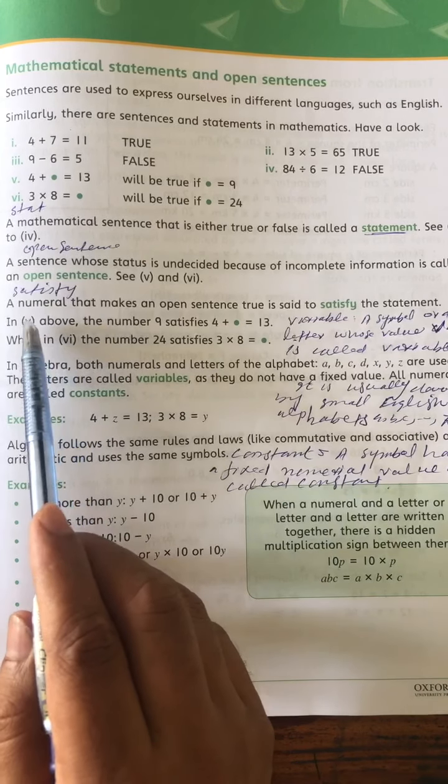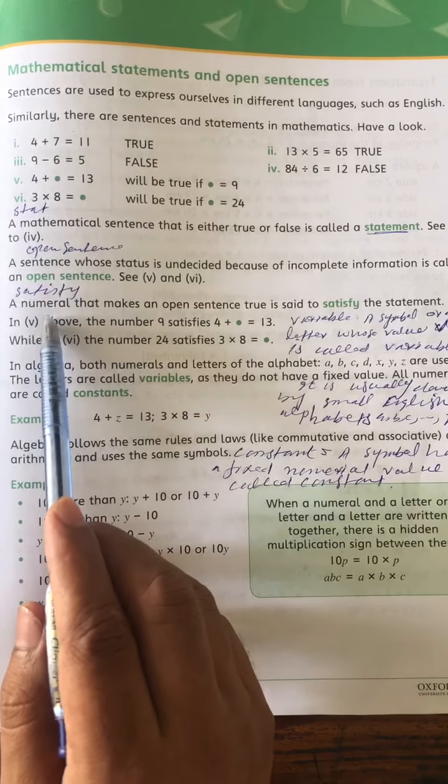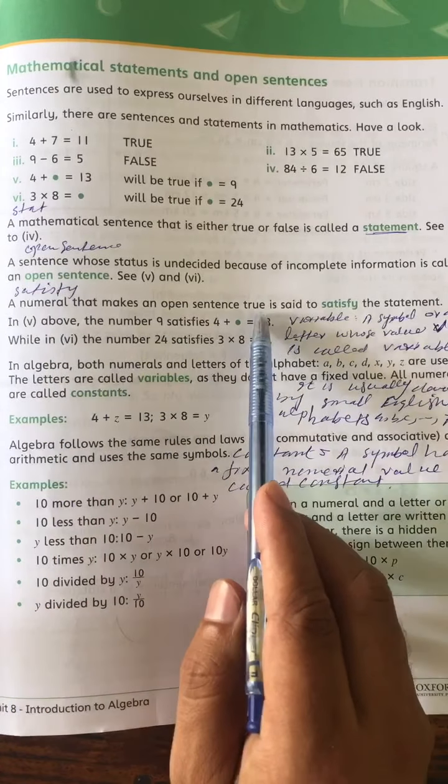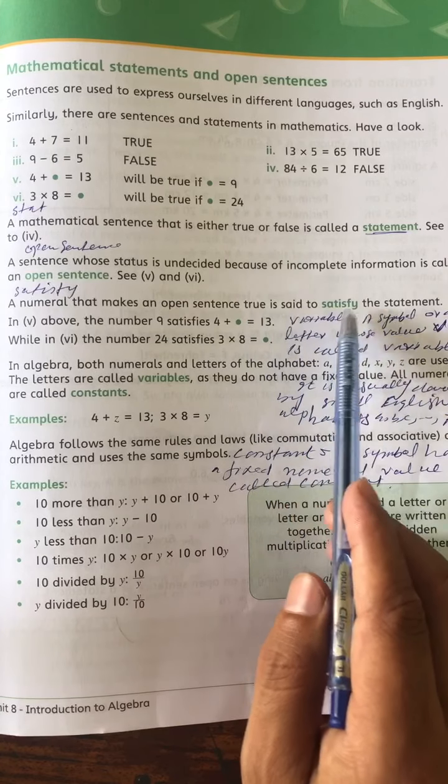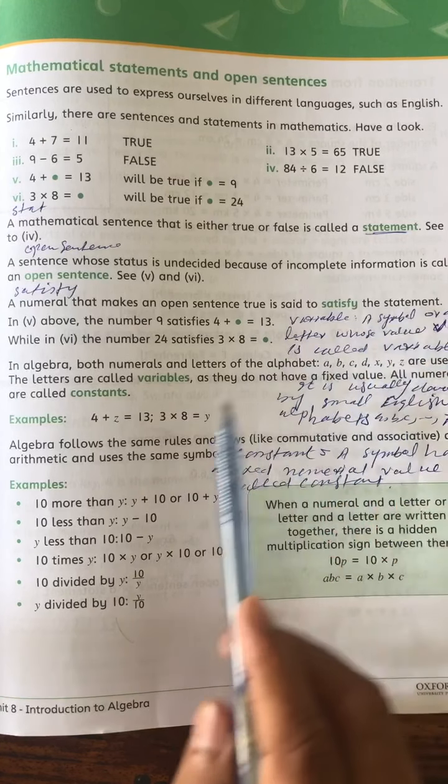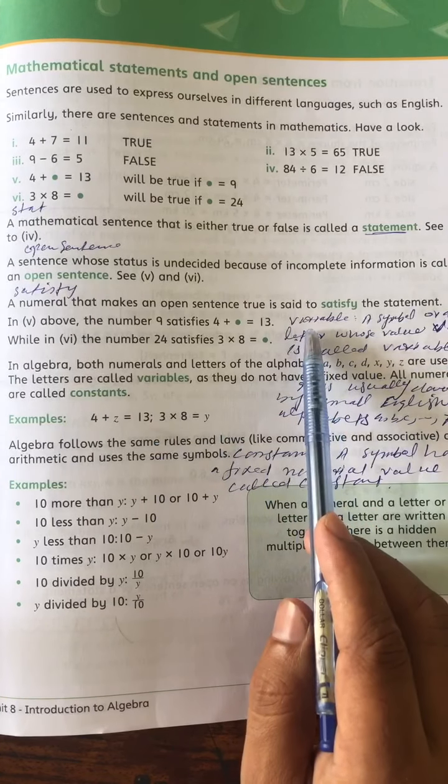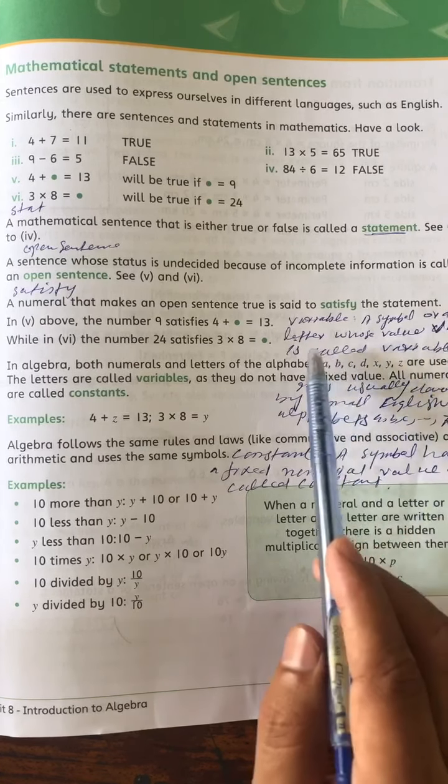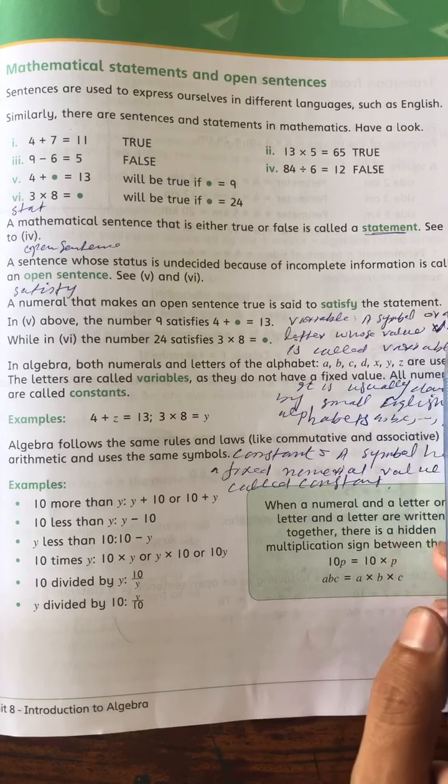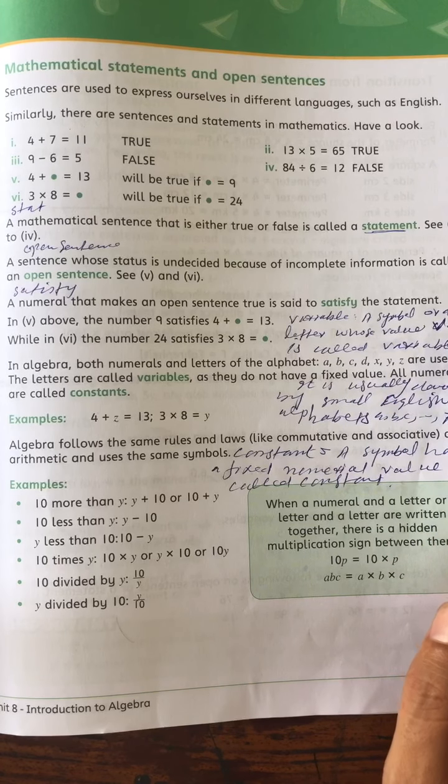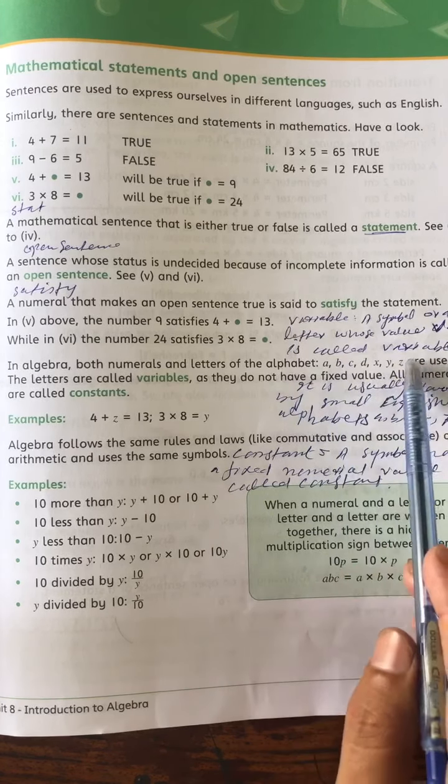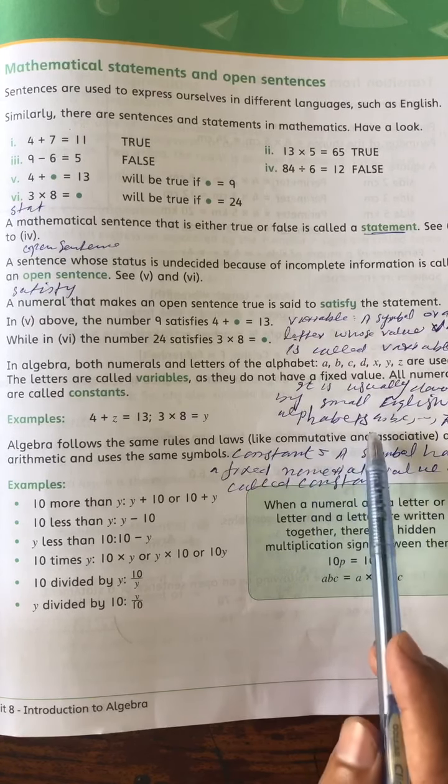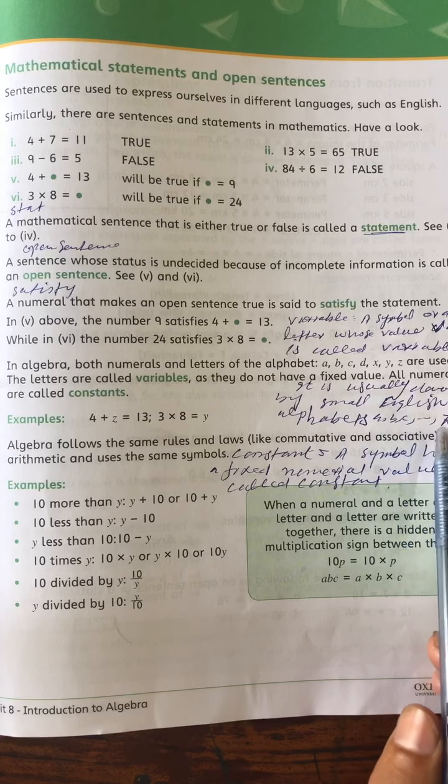What is satisfied? A value that makes an open sentence true is said to satisfy the statement. Variable: A symbol or literal whose value varies is called a variable. It is usually denoted by small English alphabets A, B, C up to Z.